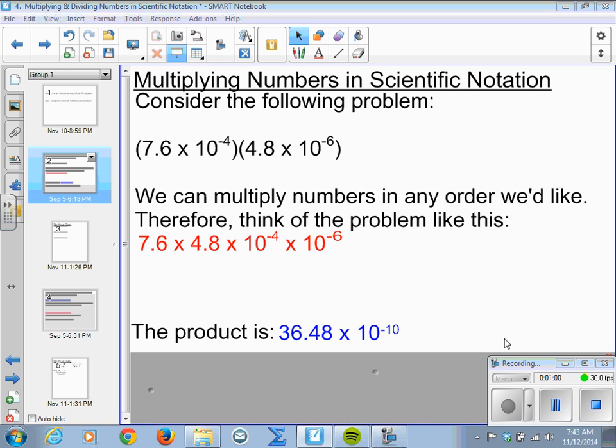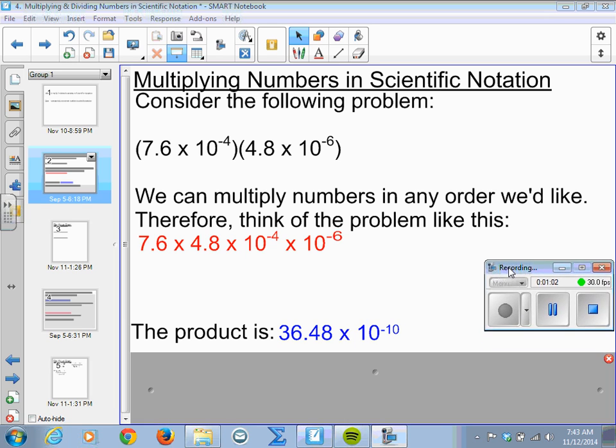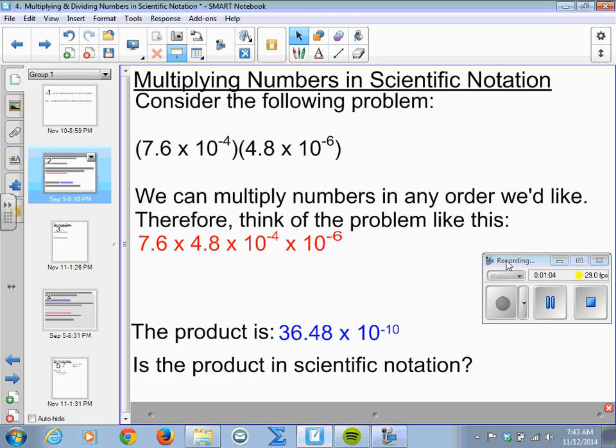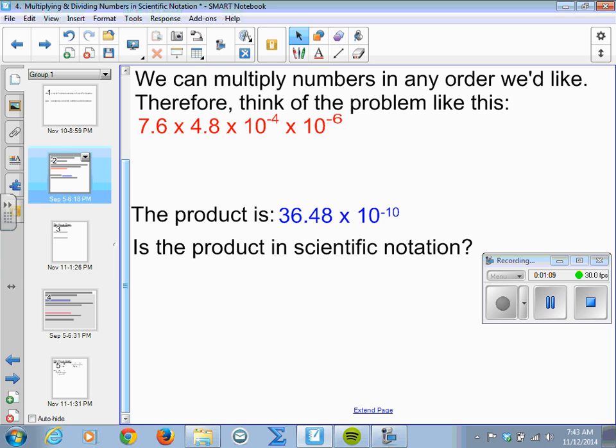So the number is here. We want the answer to be in scientific notation, so we need to move things around. Remember that we need to move our decimal point. So we have one number to the left of the point. So that becomes 3.648.